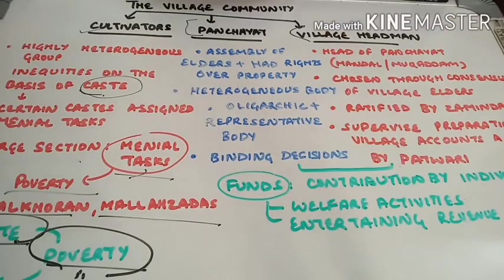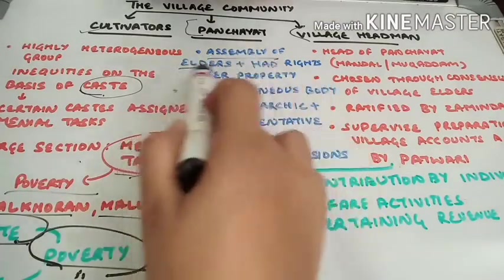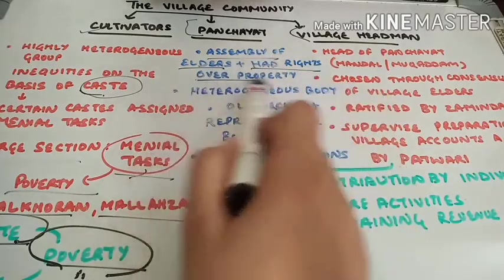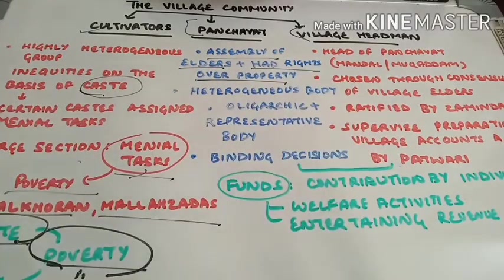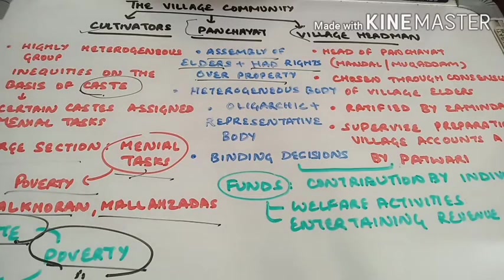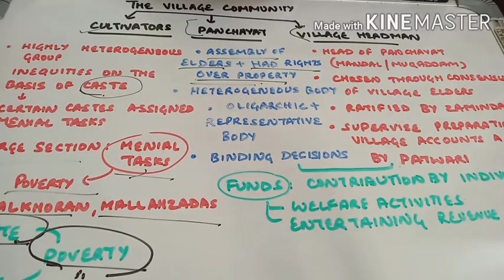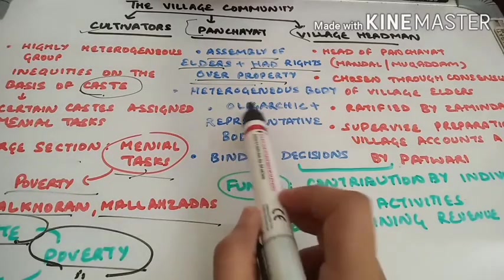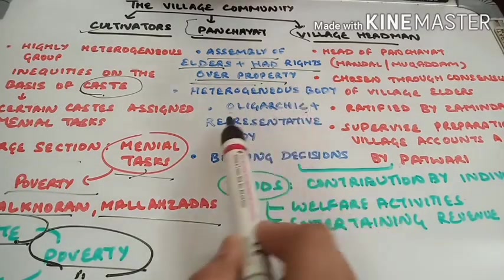Now coming on to Panchayat. Panchayat was an assembly of elders and these people had rights over their property. It comprised of elderly people — not all the elderly people of the village, but certain elderly people who had hereditary rights over their property. It was also a heterogeneous body because in a village there were many different castes. Then it was an oligarchic body and a representative body.